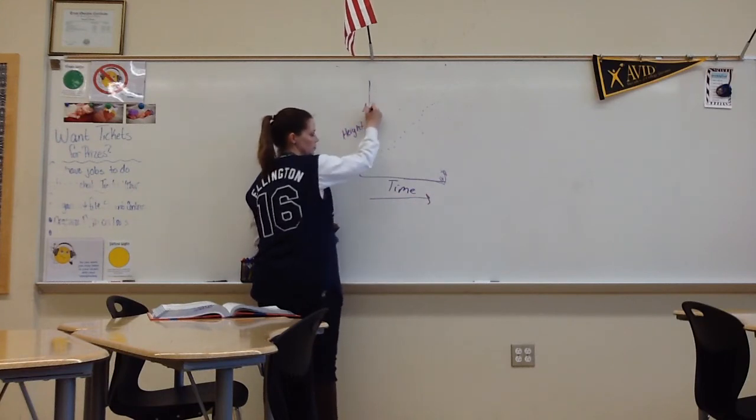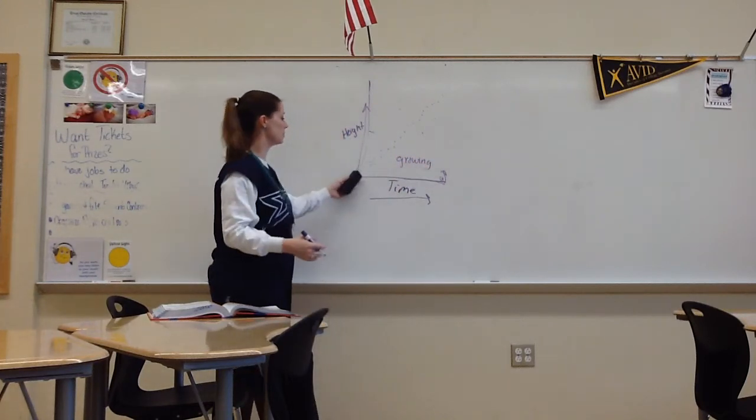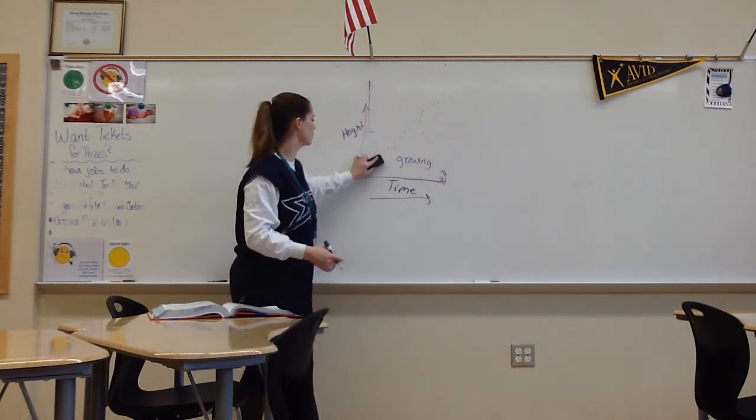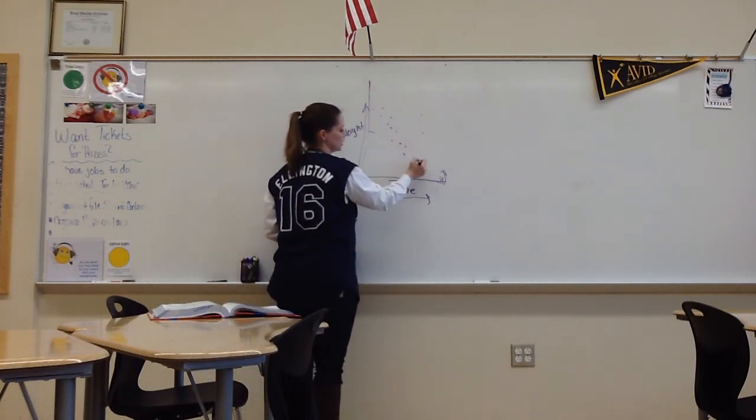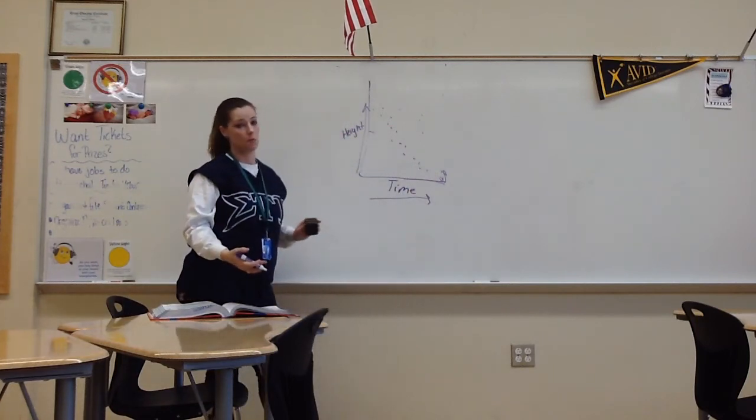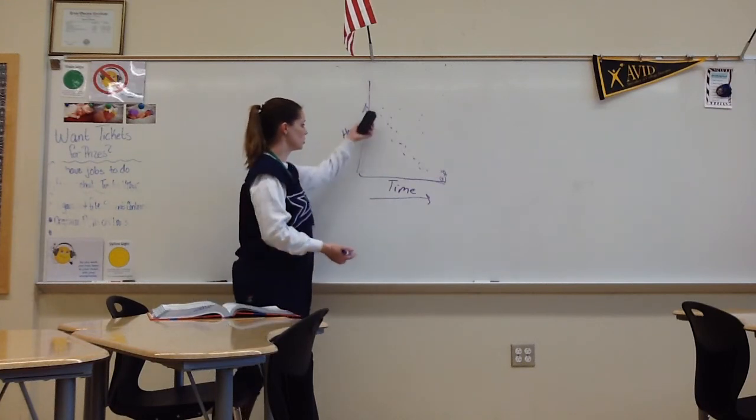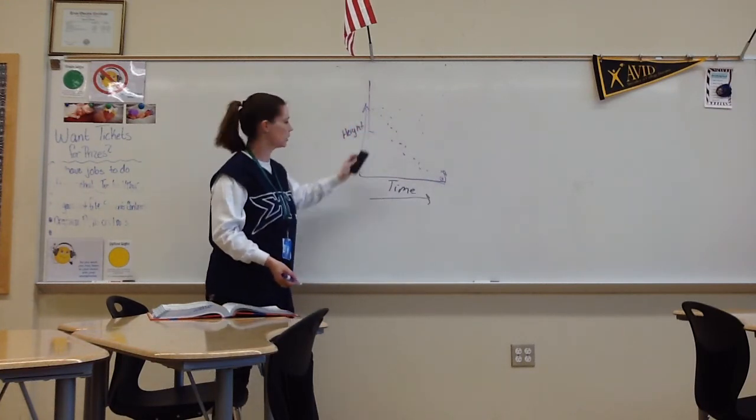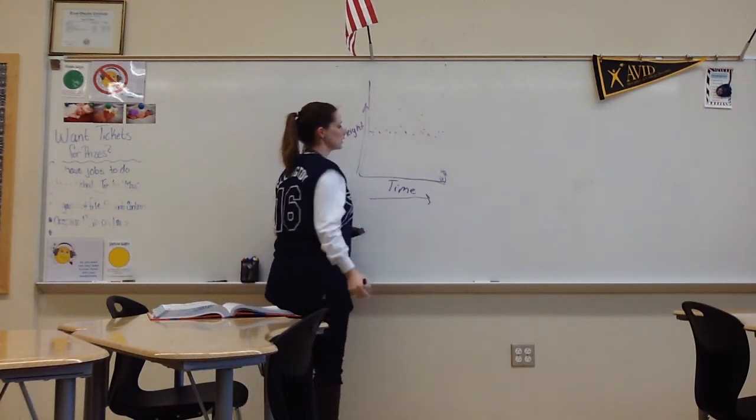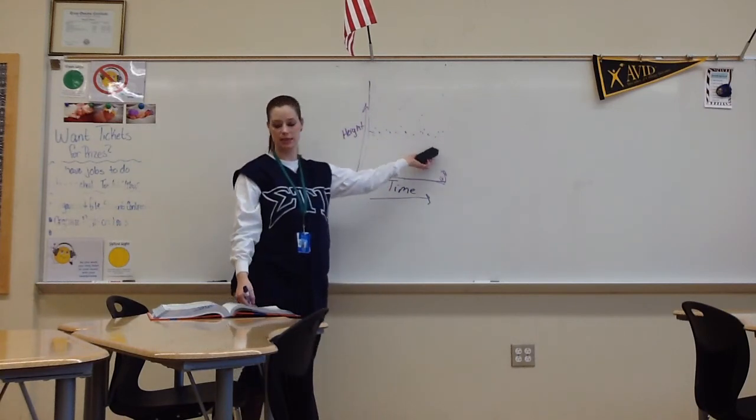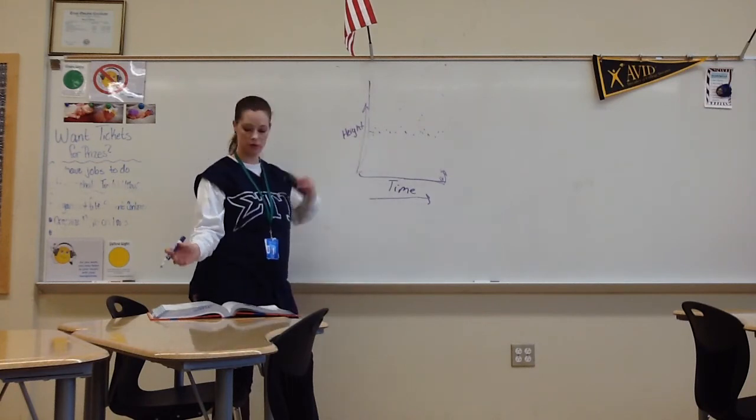your height goes up. So this means a person would be growing or a plant's growing or something's growing because as time goes on, the height gets taller. If it were a negative correlation like this, then it means somebody's shrinking. Maybe it's a plant shrinking or a tree was cut down or something like that. But they started out tall and as time got on, they got shorter. And in this situation, as time goes on, they didn't get any taller. It's just pretty much stayed the same. So that's how you match up a graph to a story problem.